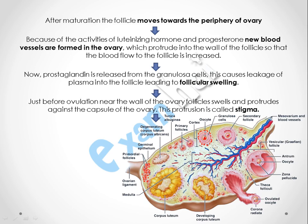The granulosa cell matures into the secondary follicle and starts moving towards the periphery of the ovary. Meanwhile, luteinizing hormone and progesterone activate new blood vessels in the ovary, and these new blood vessels protrude inside the wall of the follicle, increasing blood flow to the follicle.